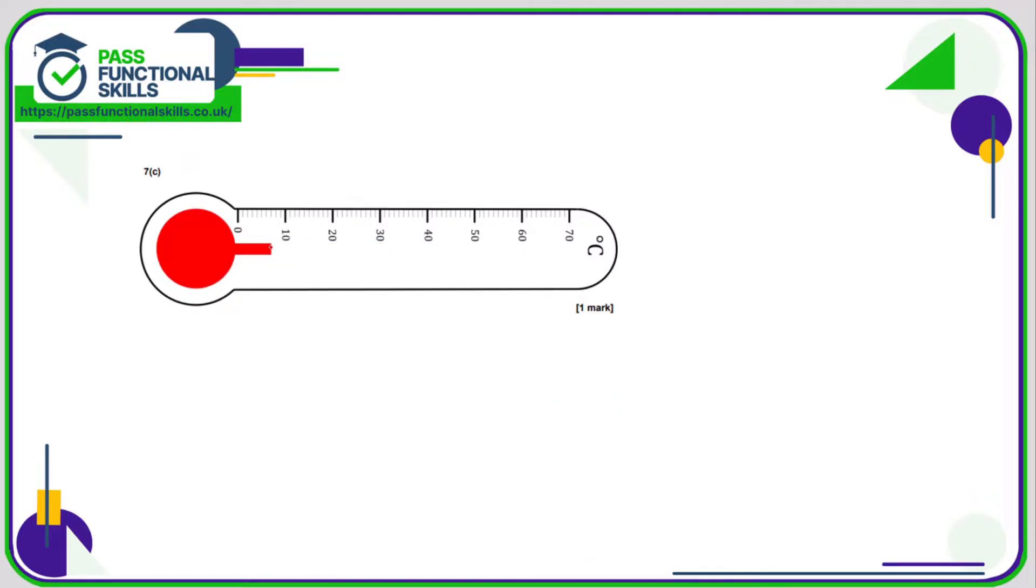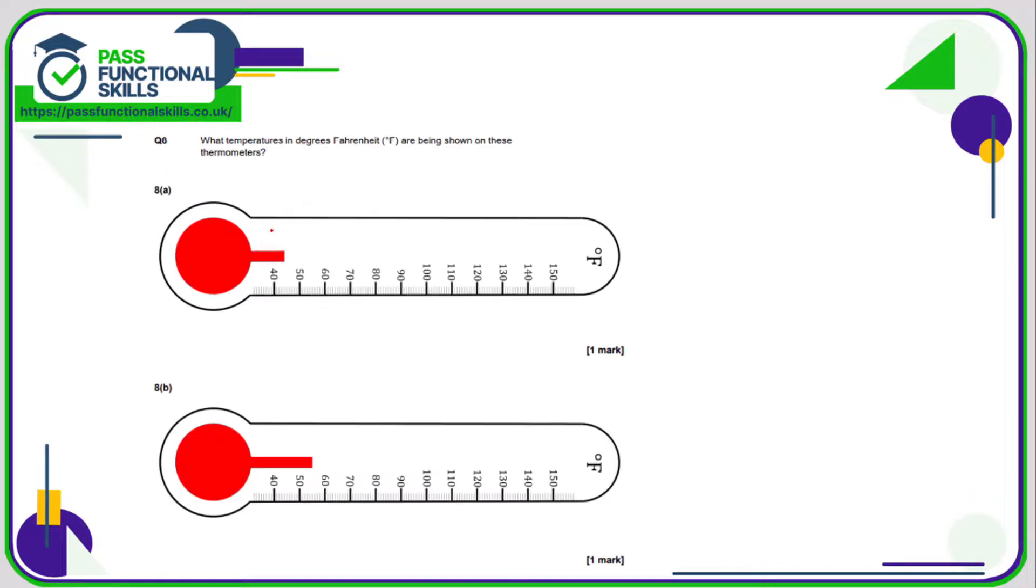For 7c, it's really hard to read these accurately because the mercury in the thermometer is not right up in the scale itself, but I would say that was probably 0.7 degrees Celsius. We're going up in ones. 8a, again quite hard to call, but that to me looks about 44 degrees Fahrenheit. For 8b, it looks pretty much halfway between 50 and 60, so I'm going to go for 55 degrees Fahrenheit.